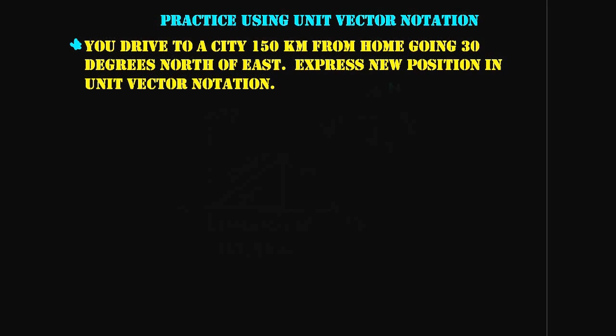For the first example, you drive to a city 150 kilometers from home going 30 degrees north of east. Express your new position in unit vector notation. So we have a complicated-sounding vector and all we have to do is write it in unit vector notation with the i-hats and the j-hats.